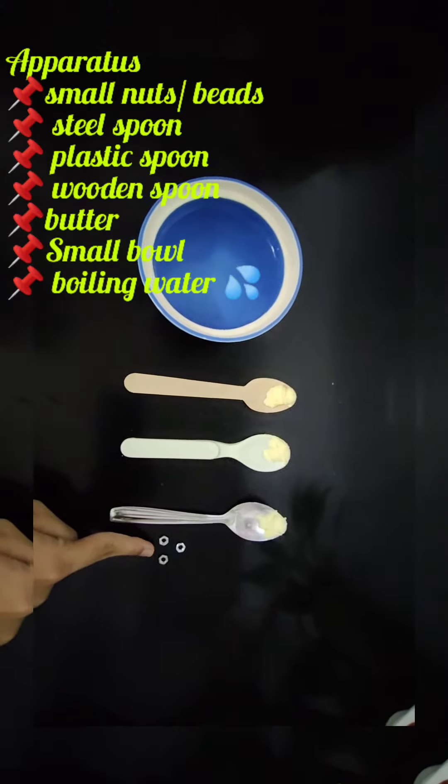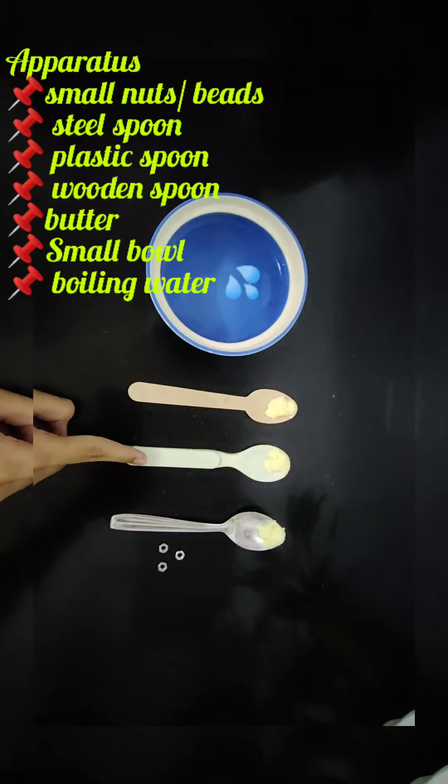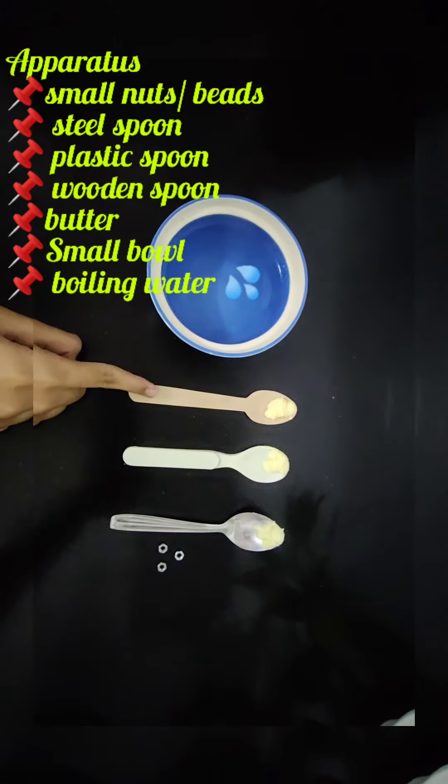Now let's see the apparatus. Nuts or beads, metal spoon, a plastic spoon, and a wooden spoon.